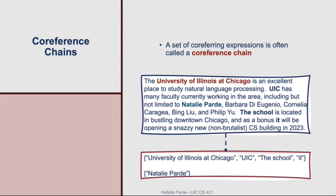A set of co-referring expressions is often known as a co-reference chain. There are technically two co-reference chains from the examples just mentioned. The first co-reference chain corresponds to the UIC entity, where we have four different referring expressions all referring to that entity. The second co-reference chain corresponds to the Natalie Party entity, where there is just a single referring expression.